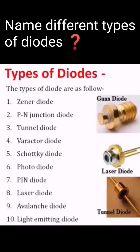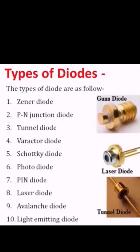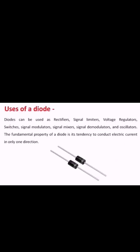Name different types of diodes. Types of diodes are: zener diode, p-n junction diode, tunnel diode, varactor diode, Schottky diode, photo diode, pin diode, laser diode, avalanche diode, and light emitting diode.